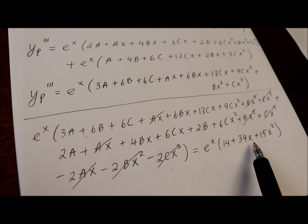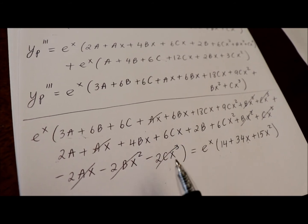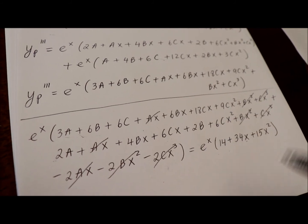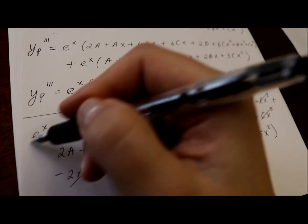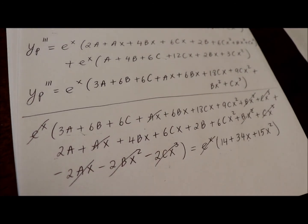which means the total constant on this side should be equal to the total constant on this side. The total term with x on this side should be equal to the total term with x on this side. And the same goes for the term with x squared. In addition, we can also cancel out e to the x since it's a factor on both sides and it's never equal to 0. So,